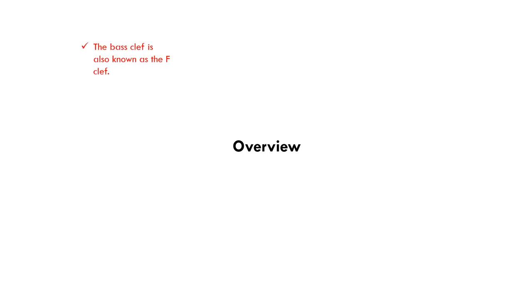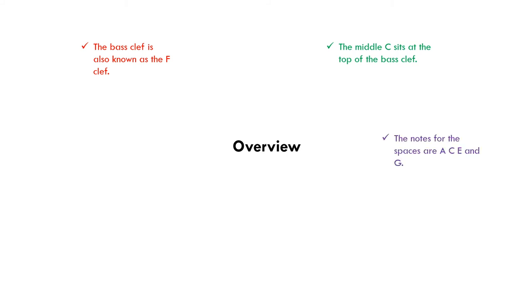The information we've obtained from this section is that another name for the bass clef is the F clef. Middle C sits at the top of the bass staff. The notes for the spaces are A, C, E and G — to remember the order we use the phrase 'All Cows Eat Grass.' The notes for the lines are G, B, D, F and A — to remember the order we use the phrase 'Good Boys Do Fine Always.'